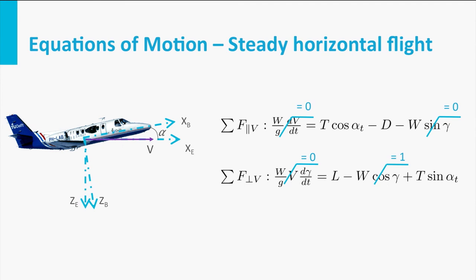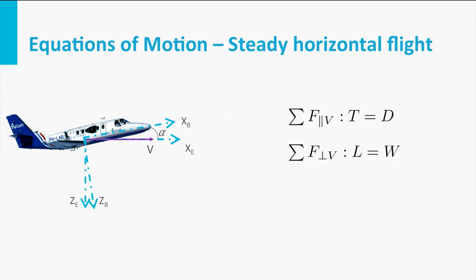Finally for conventional aircraft operations the angle of attack of the aircraft is fairly small, say up to 10 degrees, and the propulsion system is aligned with the nose of the aircraft. Hence the term cosine of alpha t can be assumed to be equal to one, and the sine of alpha t can be assumed equal to zero. Now this leaves us with the most simple form of the equations of motion, which state lift equals weight and thrust equals drag.